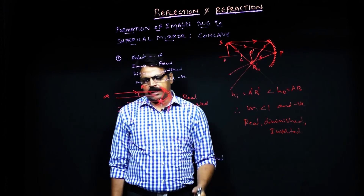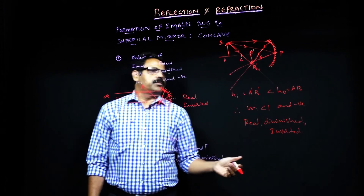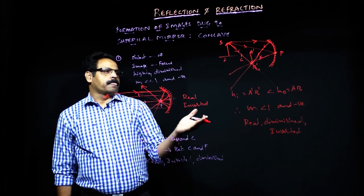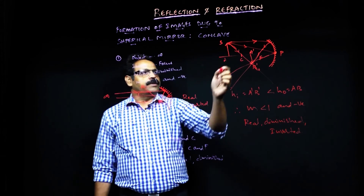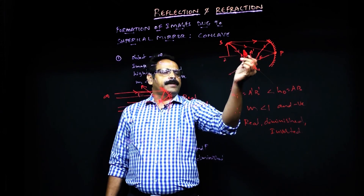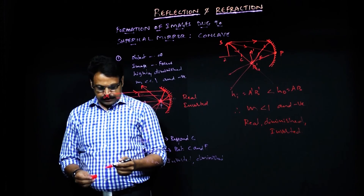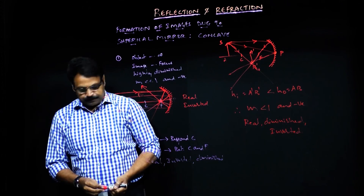Next, we look at the case where object AB is placed at the center of curvature C, and we will see how the image is formed in that situation.